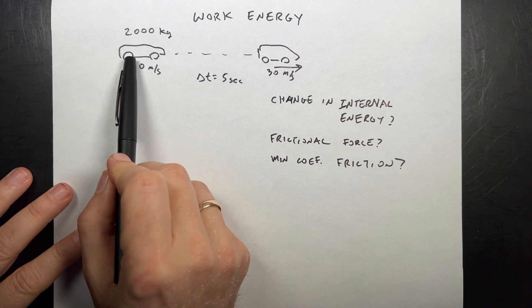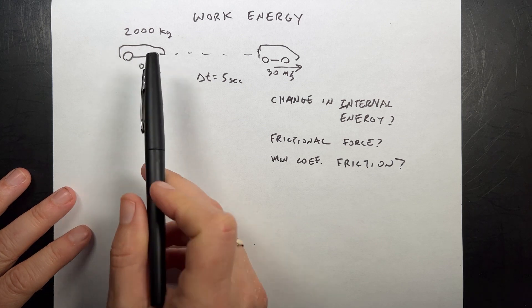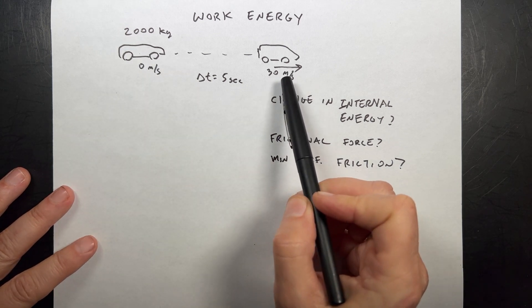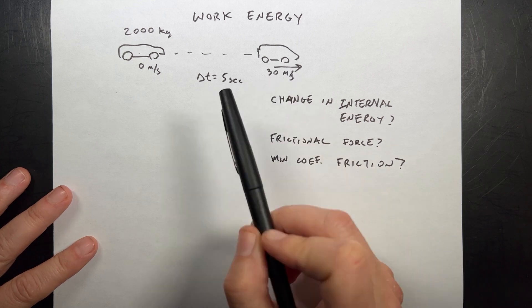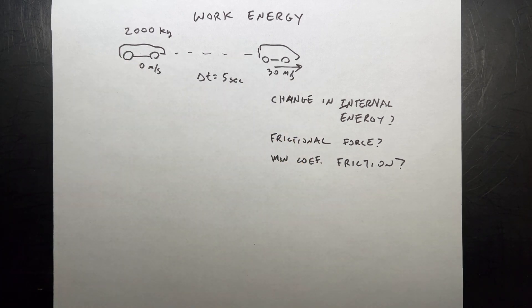So I have a car and it's a terribly drawn car because it doesn't really matter. Mass of 2,000 kilograms. It starts from rest and accelerates up to a speed of 30 meters per second in five seconds. And I think that's fairly reasonable. It's a little fast maybe. You notice that it changed from like a sports car to a minivan. That can happen sometimes.